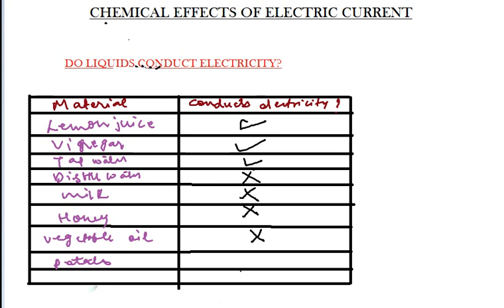Potato is also a bad conductor of electricity because it is neutral and does not contain any salt. So we see different examples of good and bad conductors of electricity. The main examples to remember are tap water and distilled water. Tap water conducts electricity while distilled water does not, because tap water contains impurities in the form of salts while distilled water does not.